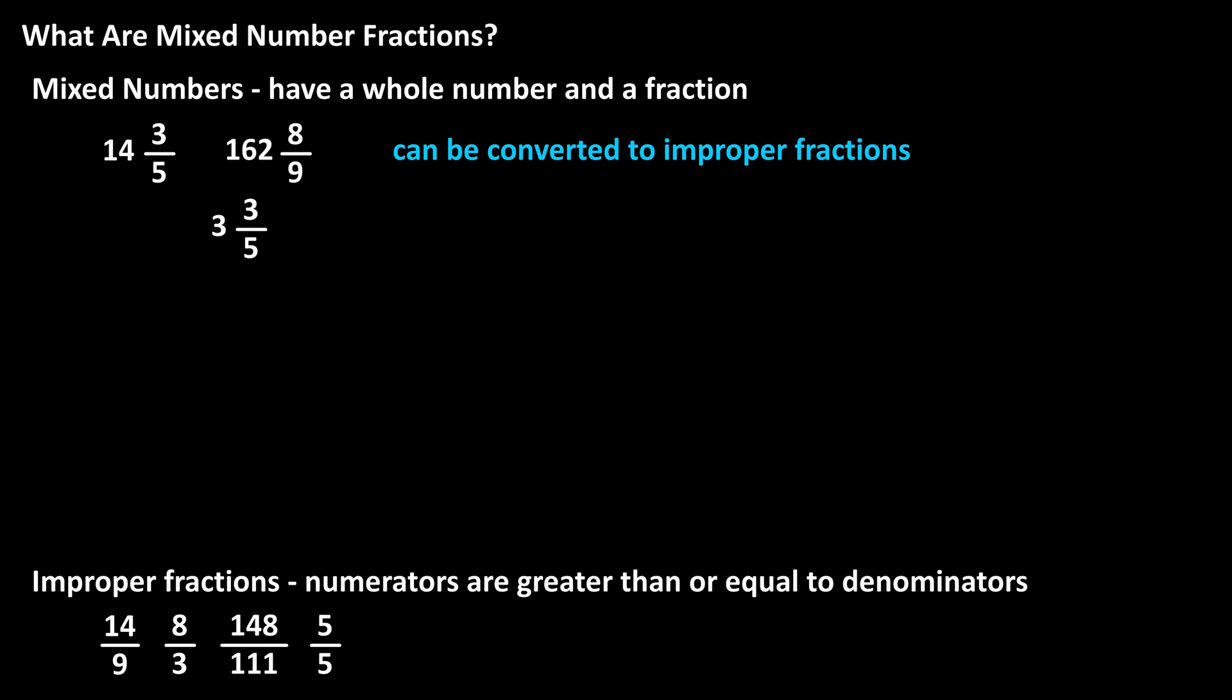For instance, 3 and 3 fifths. To convert this to an improper fraction, we multiply the whole number in the mixed number by the denominator in the mixed number, so 3 times 5, which is 15.